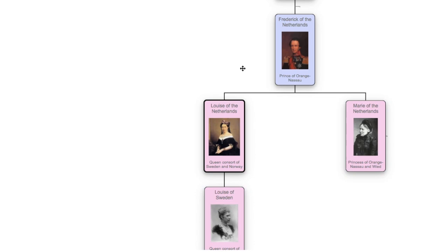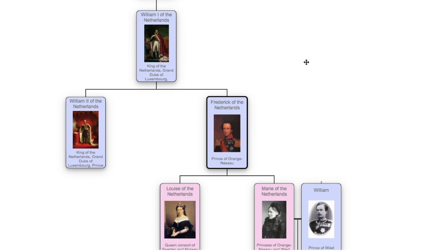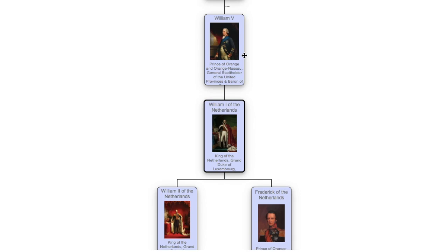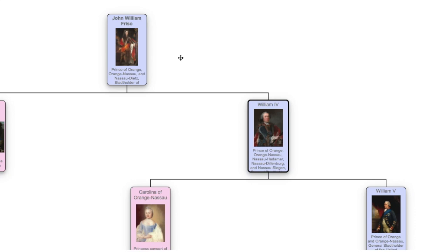She is followed by her father Prince Frederick of the Netherlands, who was the second son of King William, the first King of the Netherlands. Both his father and grandfather were Princes of Orange named William IV and V respectively. Hence, William I was the great-grandson of John William Frisaux, the patriarch of modern European monarchs.